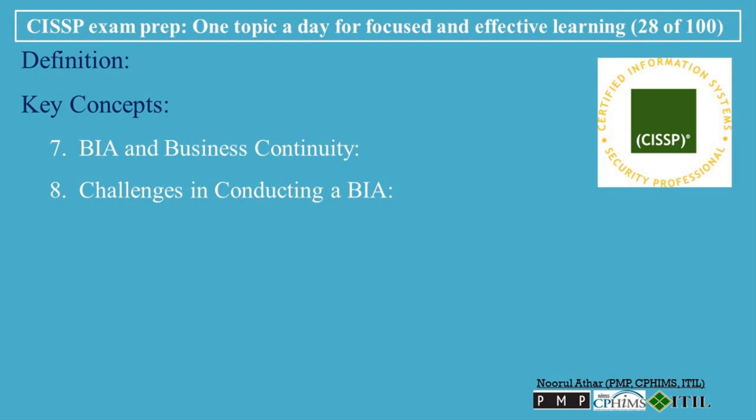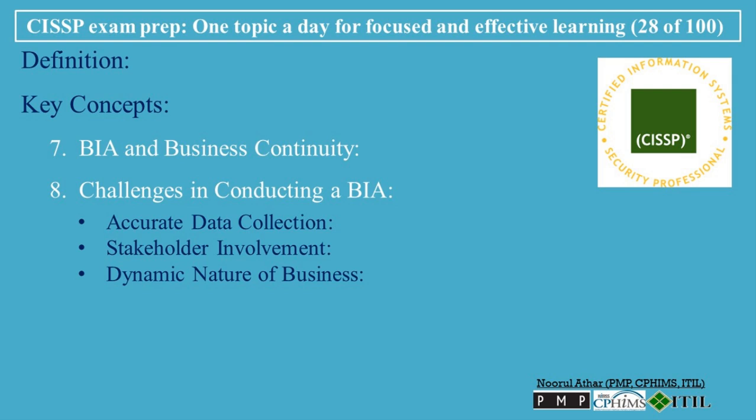Challenges in Conducting a BIA: Accurate Data Collection — gathering accurate information about business processes, dependencies, and potential impacts can be challenging, especially in large or complex organizations. Stakeholder Involvement — the success of a BIA relies on input from various stakeholders across the organization, including IT, finance, operations, legal, and senior management; ensuring consistent engagement can be difficult. Dynamic Nature of Business — business operations, technology, and risks are constantly evolving. A BIA must be regularly updated to reflect changes in business priorities, technology, and the external threat landscape.